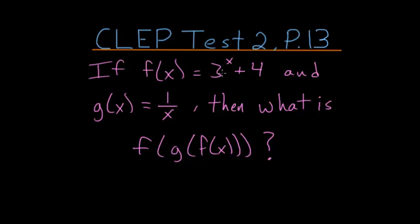If f of x is equal to 3 to the x plus 4 and g of x is equal to 1 divided by x, then what is f of g of f of x?